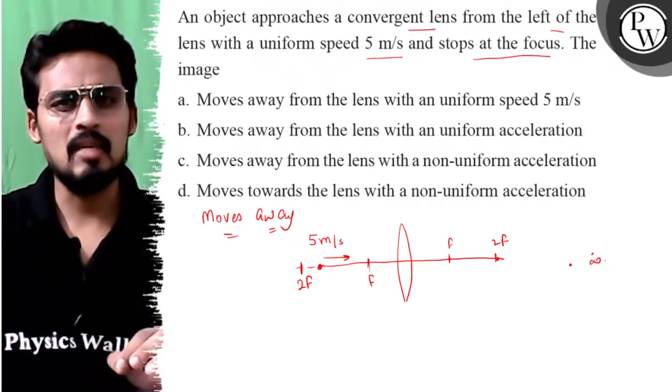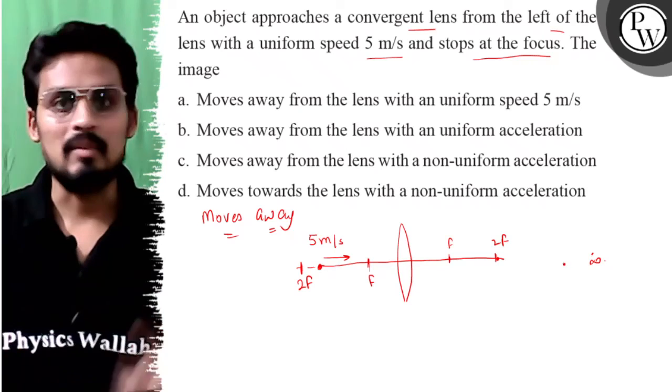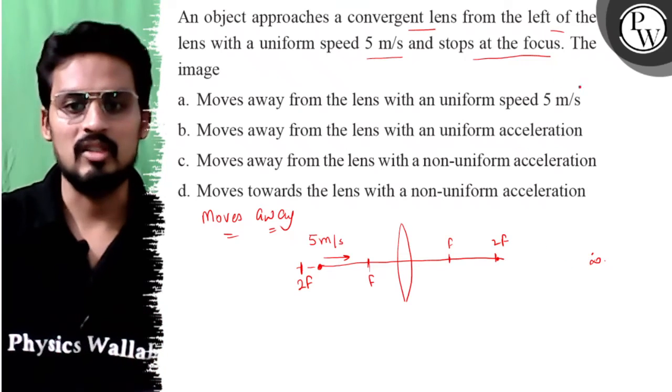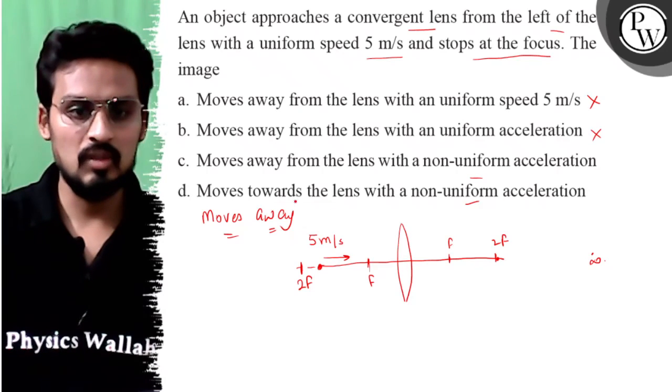So it's certain that constant velocity or uniform acceleration cannot be possible. What remains? Non-uniform acceleration. So these options are wrong. We have non-uniform acceleration, but we also have moves away or moves towards.